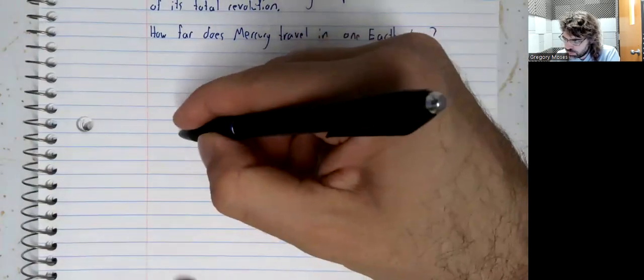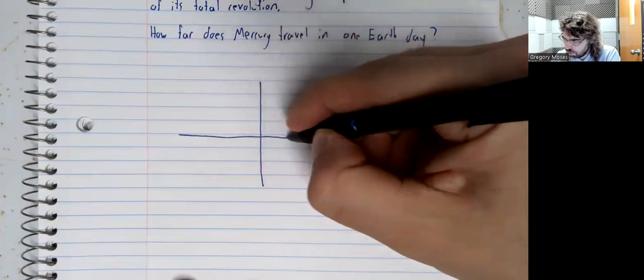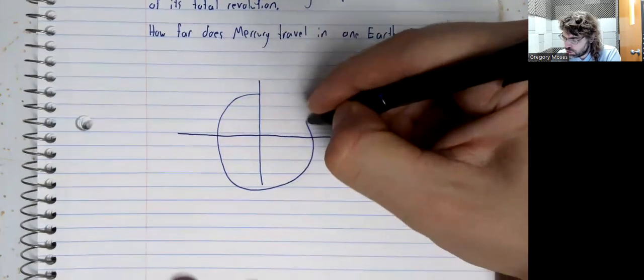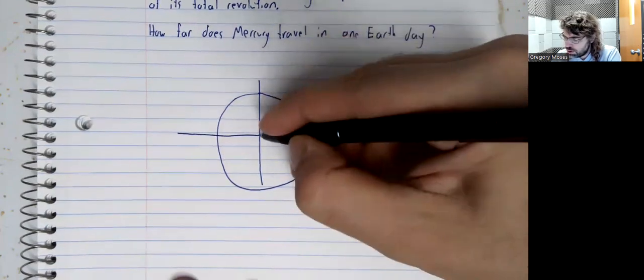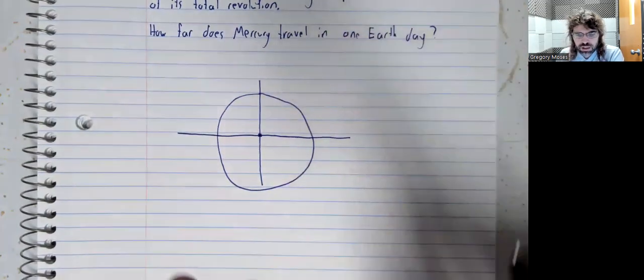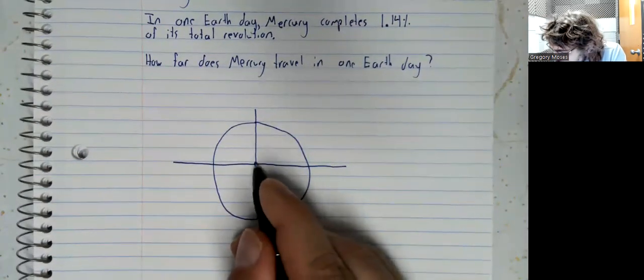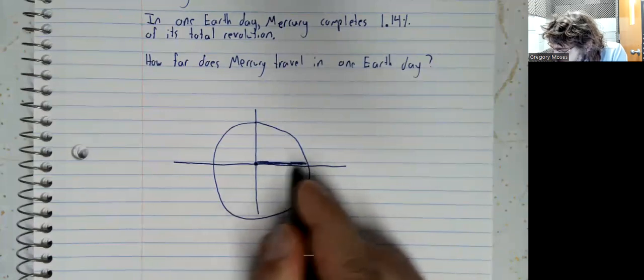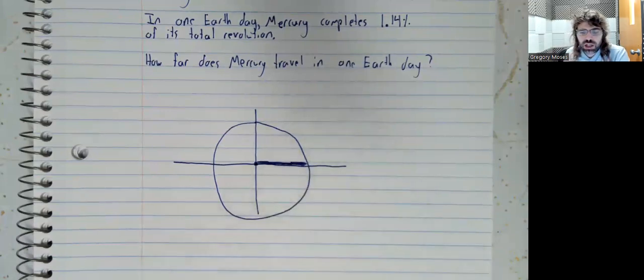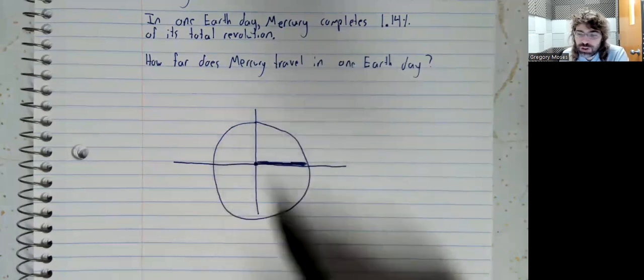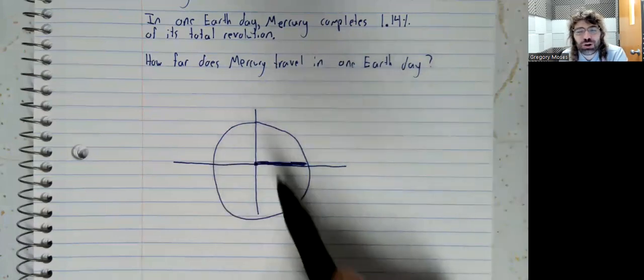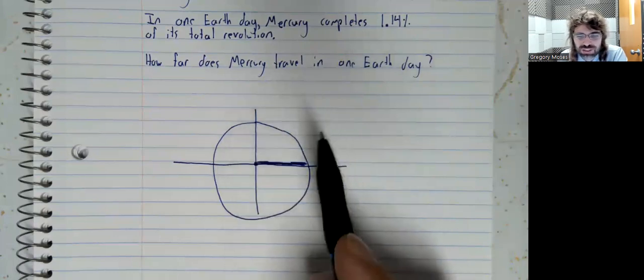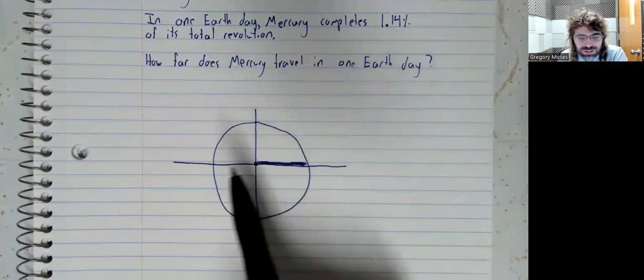All right. So here is Mercury orbiting the sun. And we'll say it starts there. You're just going to have to get used to circles that look like this. My artistic skills, they're not great.